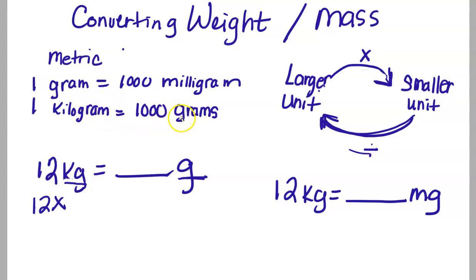And I look at my chart here and I see that there's a thousand grams in a kilogram. So I'm going to be multiplying by 1,000. I end up with 12,000, so there are 12,000 grams in 12 kilograms.